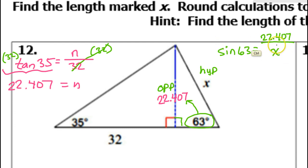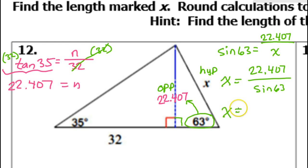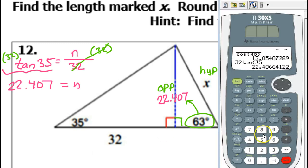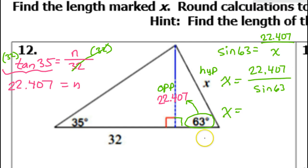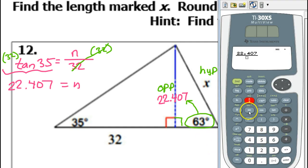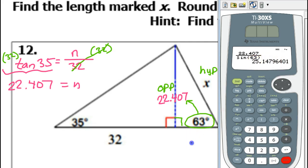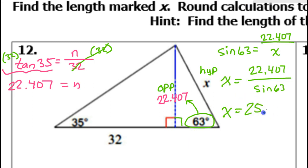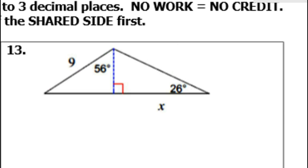When the variable is in the denominator, you can swap these. So this is going to give me X is equal to 22.407 over sine 63. You can just put all this in your calculator to get the final answer: 25.148. Got to round up — 25.148. So that will be the answer to number 12.